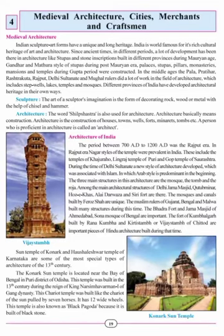Hello students, this is Asma Babbani. Today I will explain Social Science of Grade 7, Chapter 4: Medieval Architecture, Cities, Merchants and Craftsmen. Let's start the chapter.